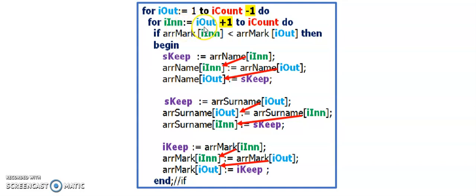So my inner loop loops from iout plus 1 all the way to the end. And what I'm doing here in my if statement, this if statement determines whether I'm sorting the array marks from highest to lowest or lowest to highest.